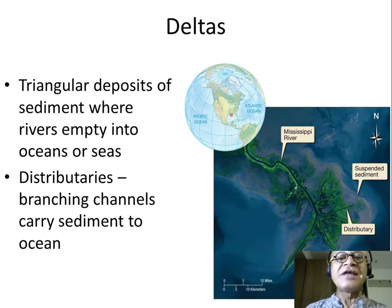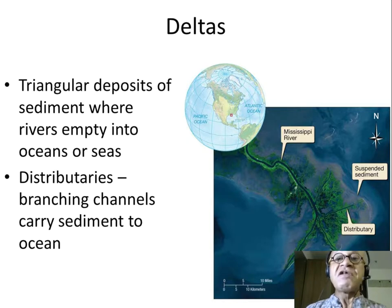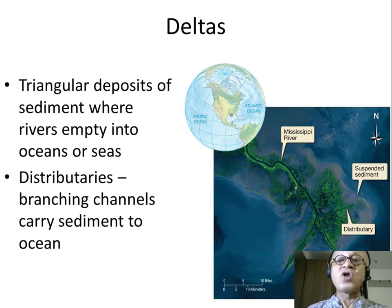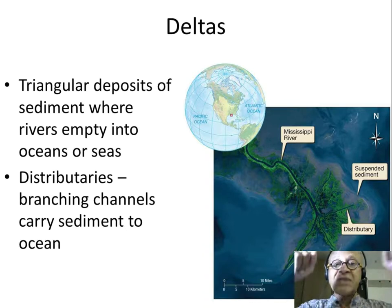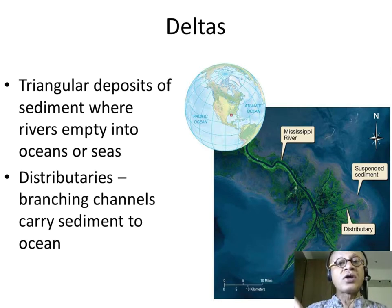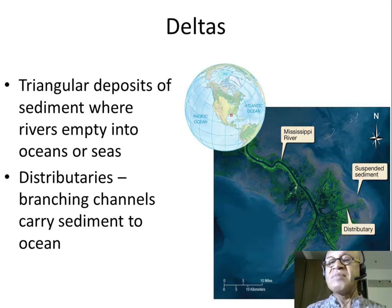The next type of coastline or shoreline is a delta, associated with rivers which bring in lots of sediments, nutrients, organic matter and so on. That depends on what's on the watershed. The watershed is where all the rain that falls gets collected into tributaries, and the tributaries flow into the main river that will flow all the way out into the oceans or the regional sea or the gulf. So the Mississippi Delta is one of the more famous ones.